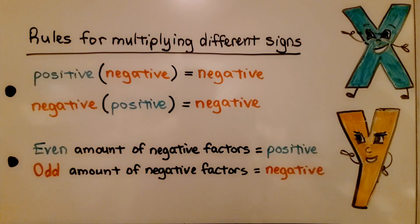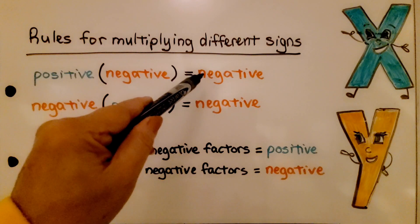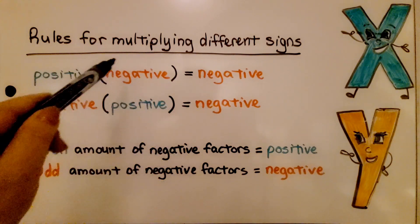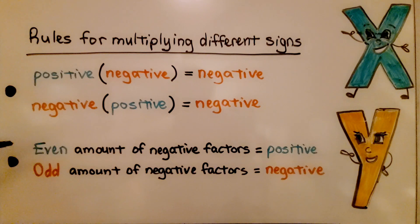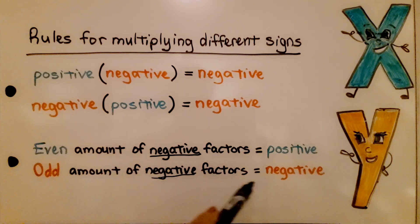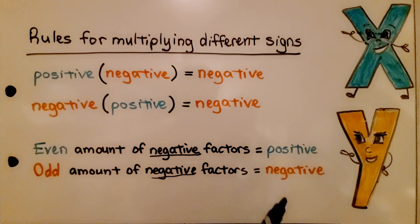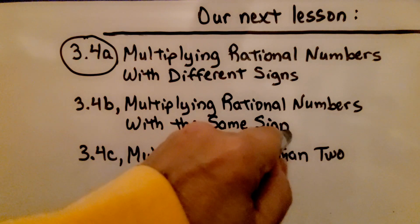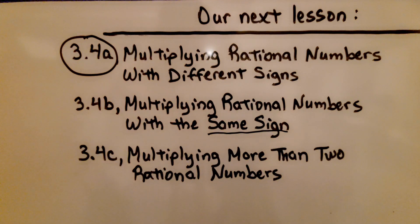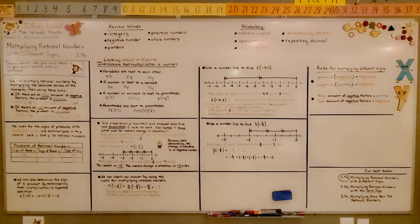One more time, here are the rules for multiplying different signs: if we have a positive times a negative, the product is negative; if we have a negative times a positive, it's negative. If there's an odd amount of negative factors, it's going to be negative; if there's an even amount of negative factors, it will be positive. Counting how many negative factors are in the equation will tell us if we need a positive or negative product. We finished Part A and we're going to move on to Part B: multiplying rational numbers with the same sign.